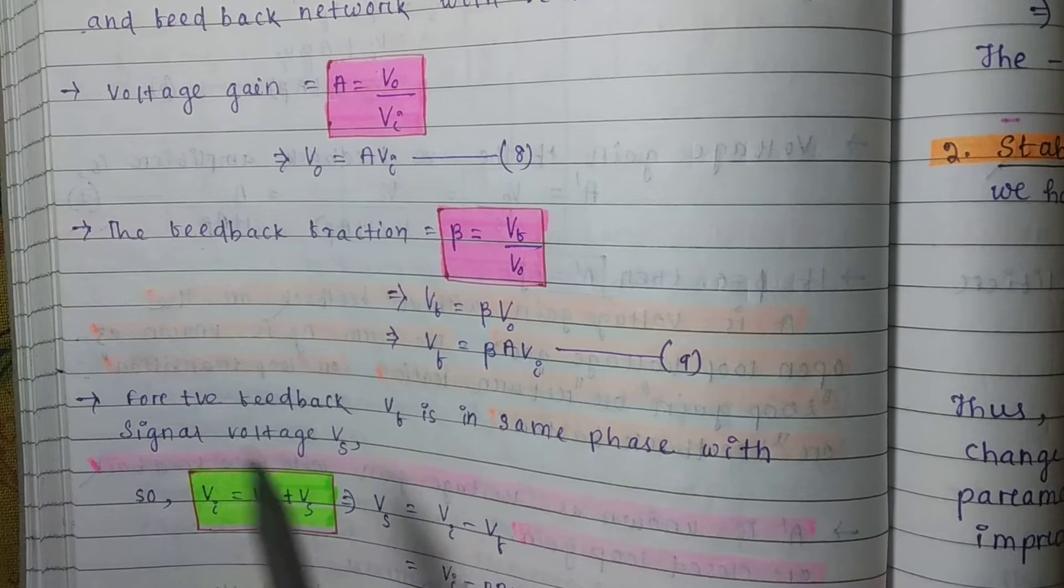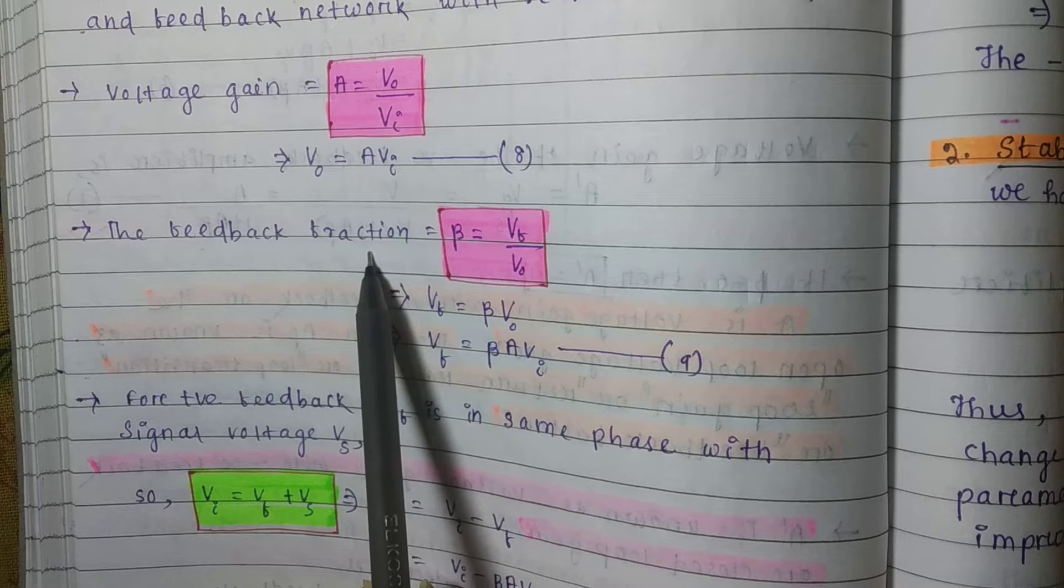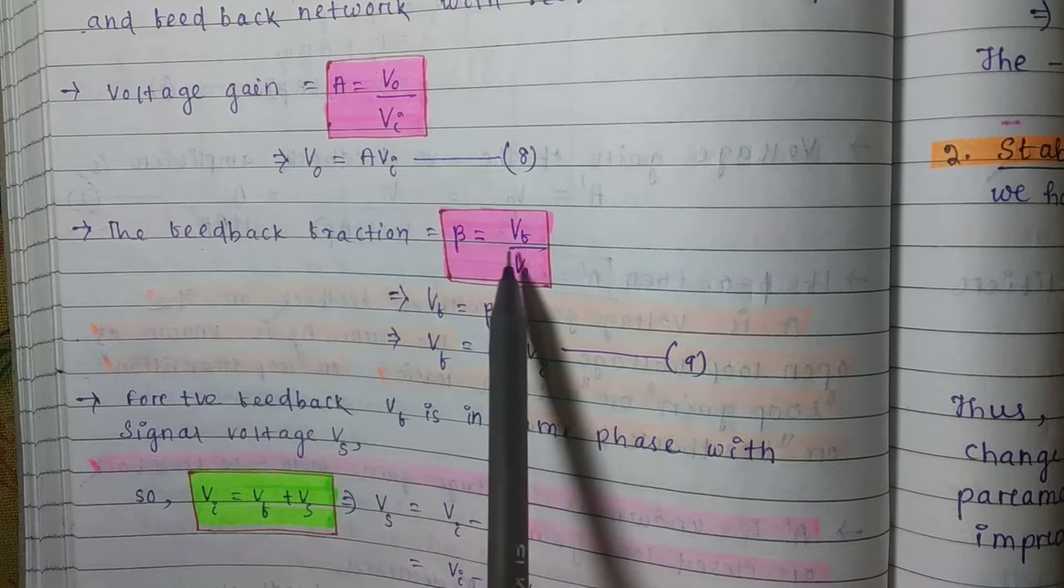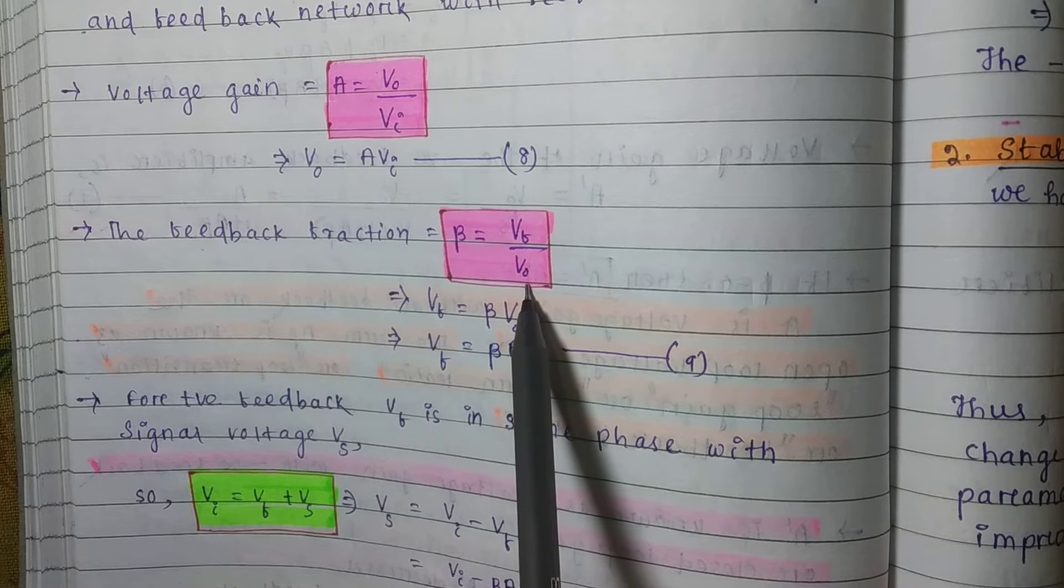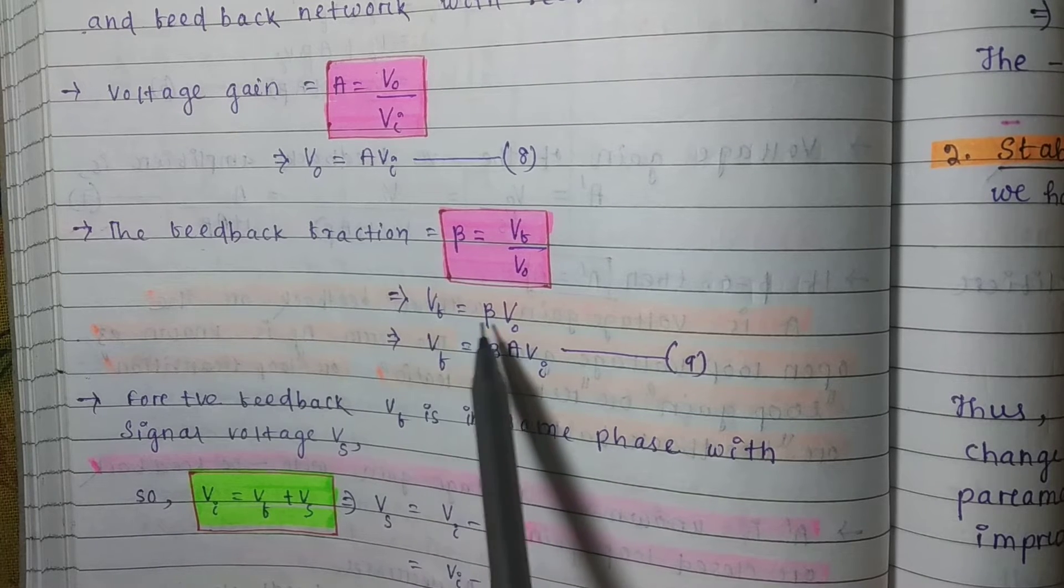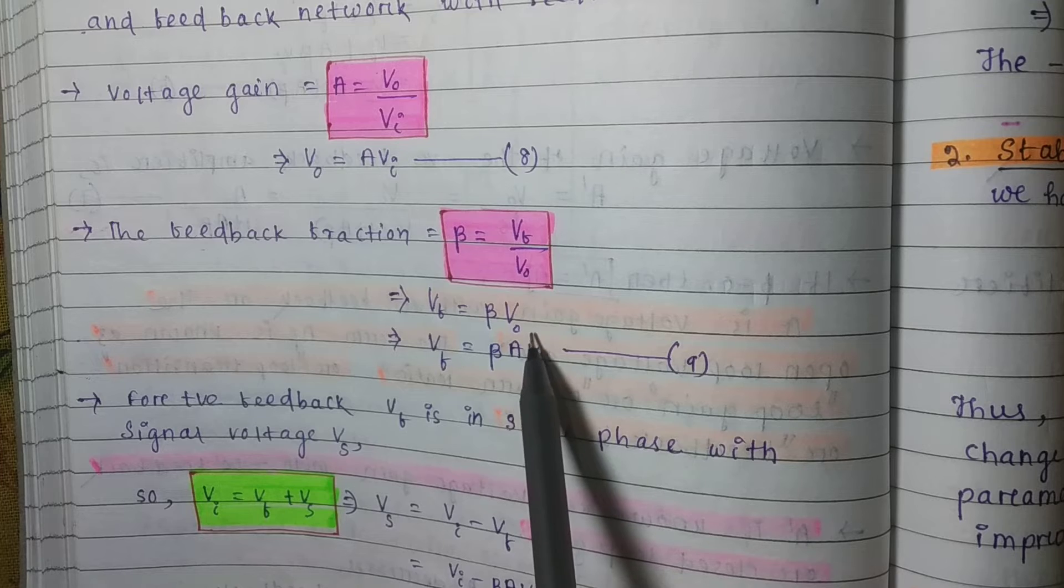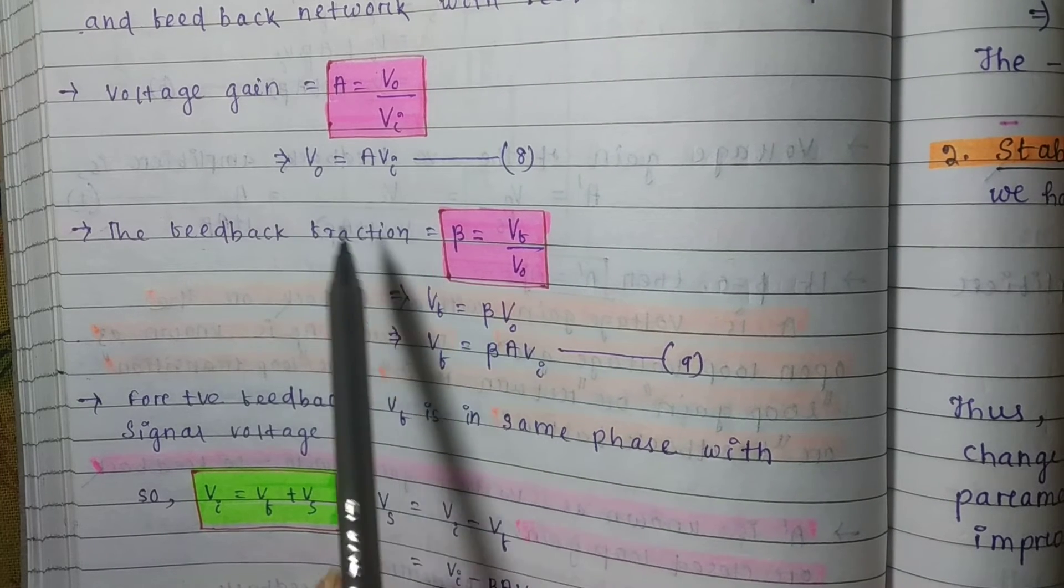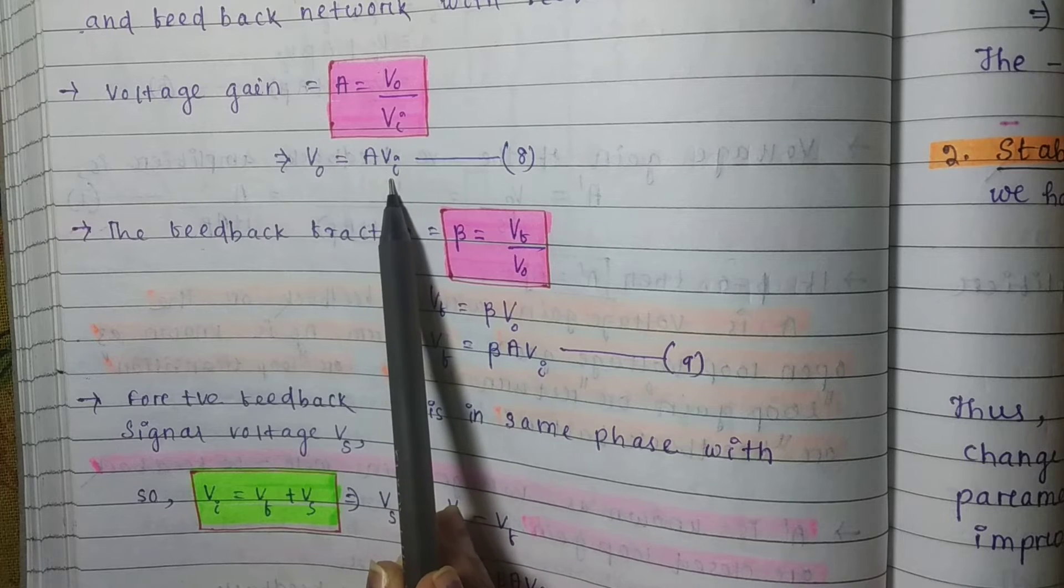Similarly, the feedback fraction beta equals to VF by V O. VF is the feedback voltage, V O is the output voltage. So VF equals to beta into V O. VF equals to beta A V I.